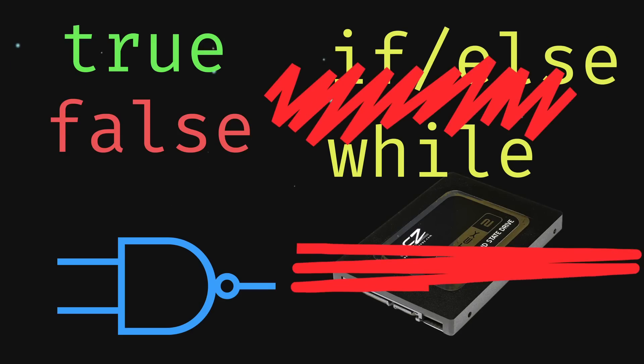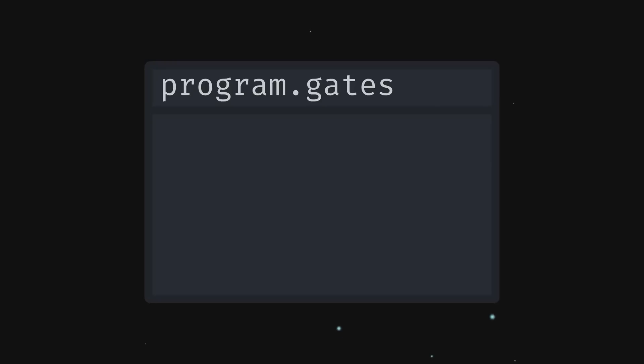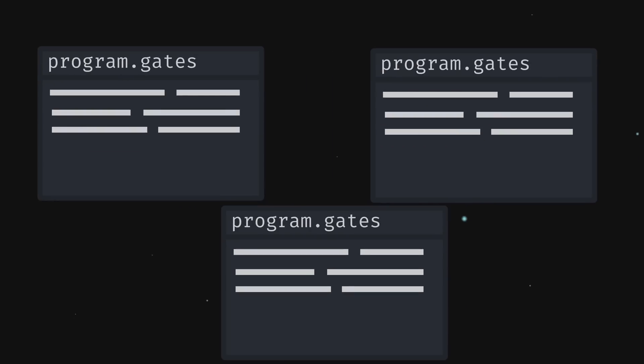With just logic gates and binary, we have what is known as a functionally complete system. That means you can write any program you want for any given input size. This input size is an important limitation.